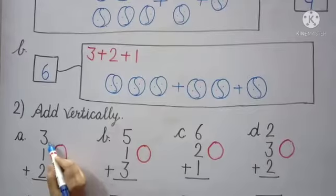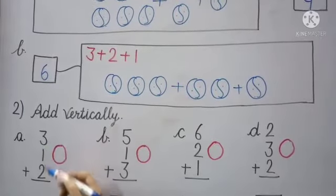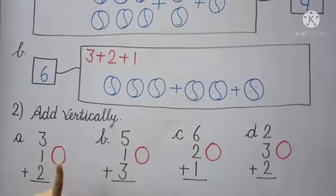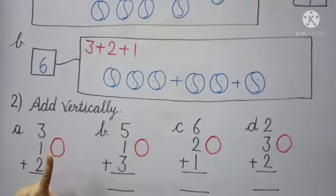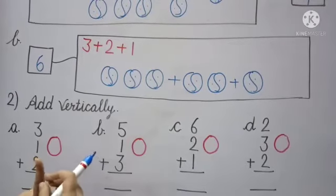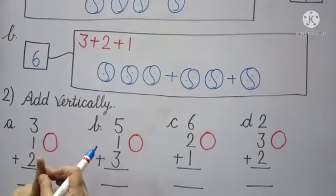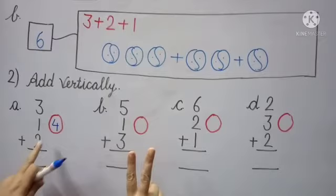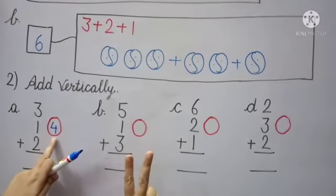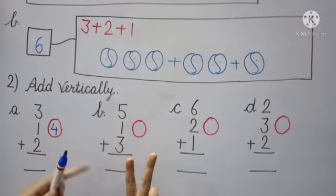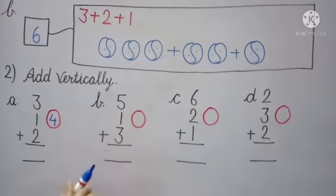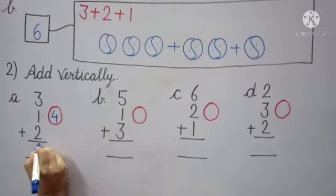Yes. First number is 3 — keep 3 in the mind. Next number is 1, raise one finger. What comes after 3? Count after 3: 4. So here we write number 4. Now keep 4 in the mind. Next number is 2, raise 2 fingers. Count after 4: 5, 6. So here we write number 6.